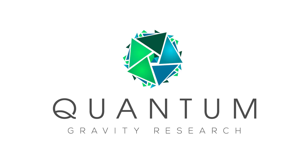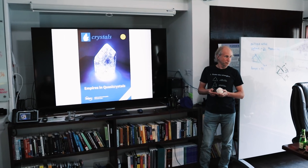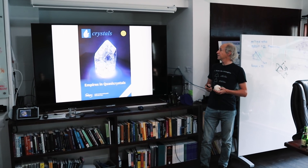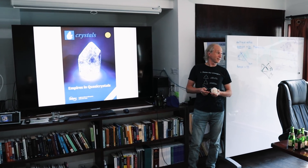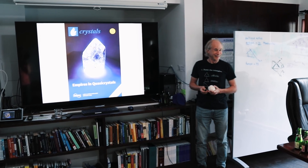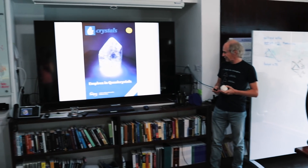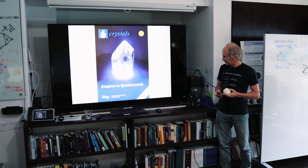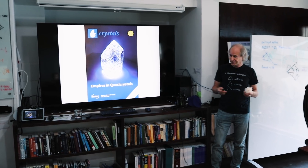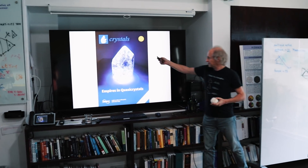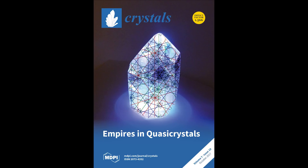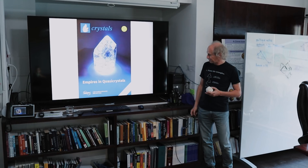We are celebrating making the cover of this month's journal Crystals — it's a good name. The article on the empires in quasicrystals is from Fang, Duggan, and Klee. Congratulations. They made a beautiful quartz image of our empire image. This is the October issue.